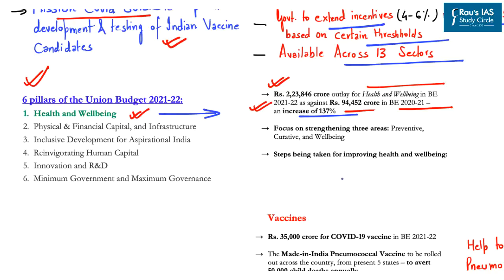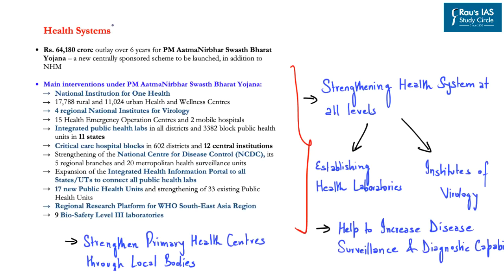Under health and well-being, the article focuses on three main areas: the preventive area, the curative aspect, and the well-being of a person. The budget provides Rs 64,180 crores over six years for Pradhan Mantri Aatma Nirbhar Swastha Bharat Yojana — a new centrally sponsored scheme to be launched in addition to the National Health Mission.